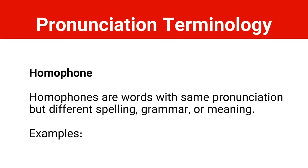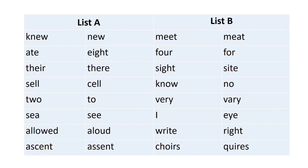The second term is homophone. It's taken from two words: 'homo' means same, 'phone' means sound. Homophones are words with the same pronunciation but different spelling, grammar, or meaning — we have the same phonetic transcription but different alphabet letters. For example, 'knew' and 'new': 'I knew your car is new.' 'Ate' and 'eight': 'Last night I ate eight apples.'